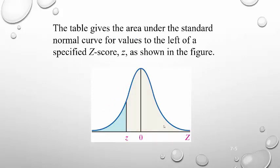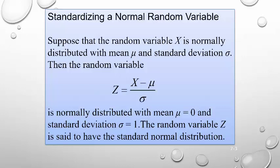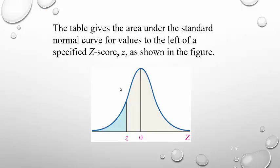Remember, z has an average of zero, standard deviation of one. So this is what that standard normal curve looks like. It's centered at zero, and its standard deviations are just one. We have this table, and what's really great about it is we can take any variable and transform it into a standard variable z. Then what we do is we have this table that gives the area under the standard normal curve for values to the left of a specific z-score, as shown in this figure.